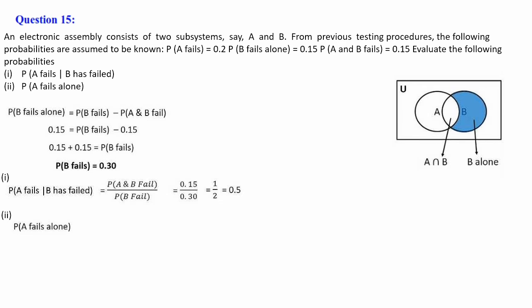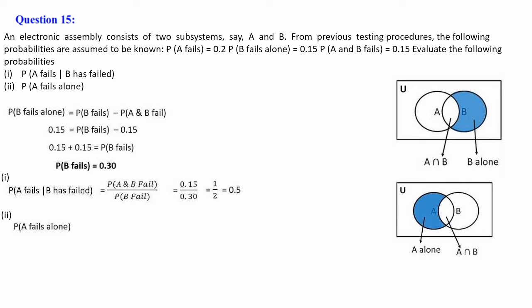For part two, P(A fails alone): this is the region of A excluding the intersection. P(A fails alone) = P(A fails) − P(A∩B) = 0.20 − 0.15 = 0.05. So the probability of A failing alone is 0.05.